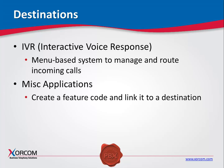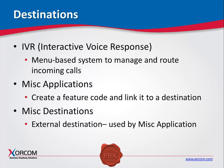Miscellaneous applications provide an option to create a feature code and link it to a destination. Miscellaneous destinations are external destinations which are used by the miscellaneous application to direct the call. For example, you could define the CEO's cell phone as a miscellaneous destination and associate it with a miscellaneous application that would add a short dialing code, such as 333. If the CEO's cell number changes, the 333 dialing code would still reach him after you update the destination.